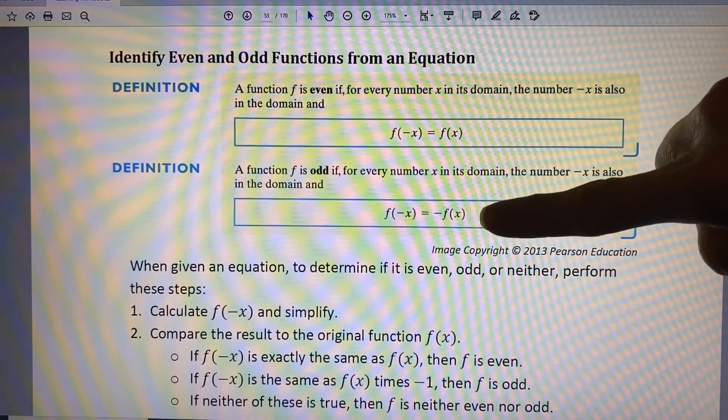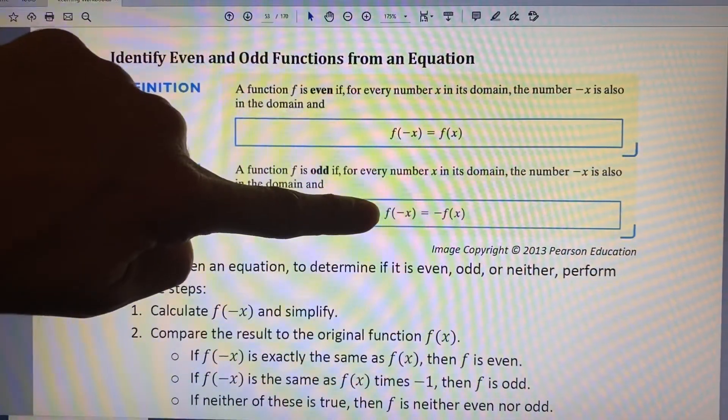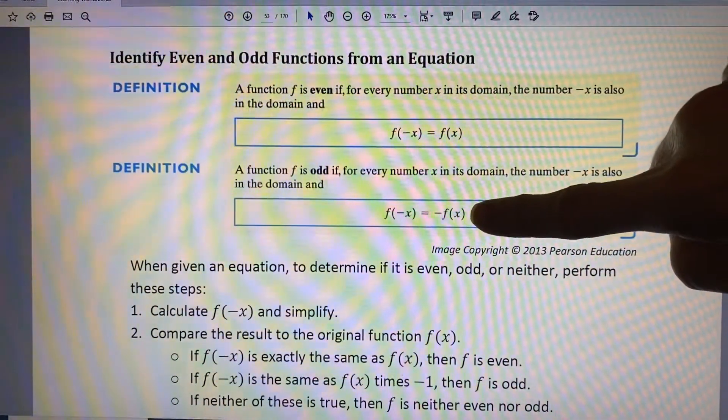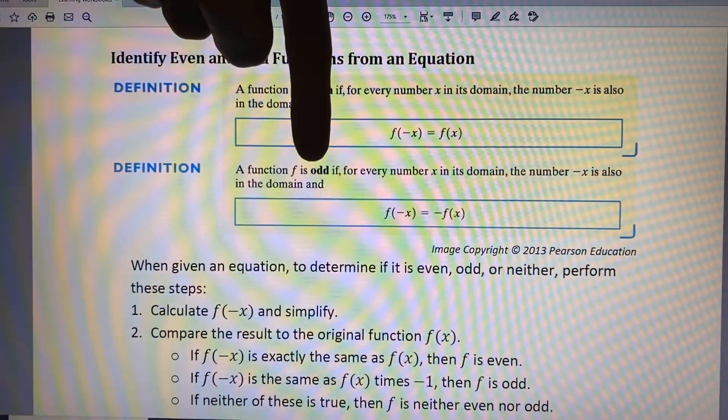You might notice that here we have f of x times negative 1. So if f of negative x equals negative 1 times f of x, then that makes your function an odd function.